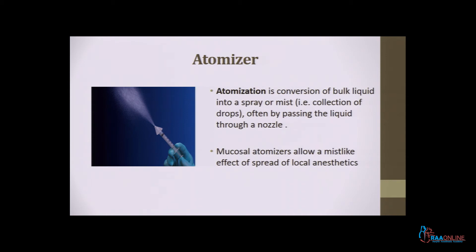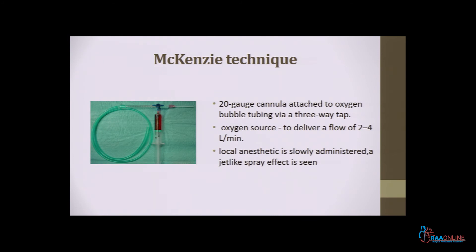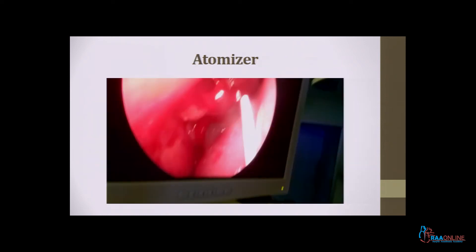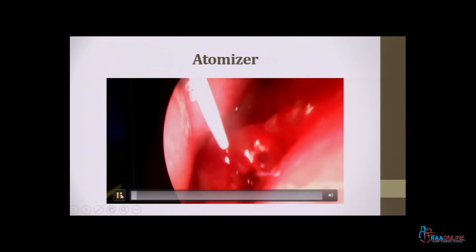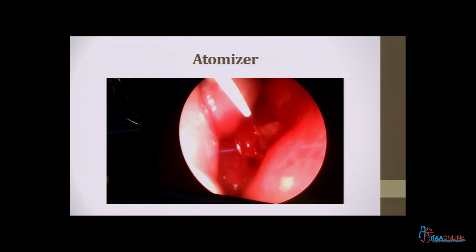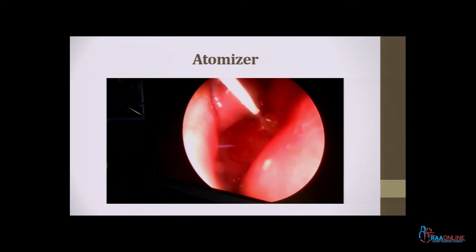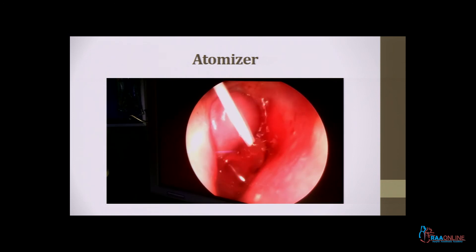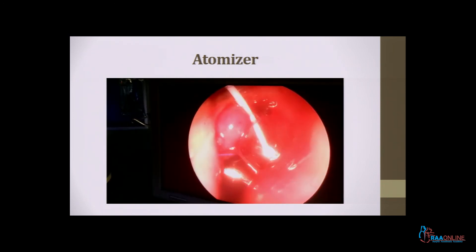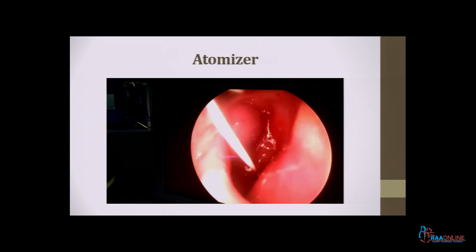One such equipment is available, and a recently introduced method is the McKinsey technique, which uses commercially available items: an arterial cannula, a 3-way adapter, a syringe with local anesthetics, a monoval syringe, and oxygen tubing. The advantage is that oxygen flow is utilized to deliver the local anesthetic. The video shows how only 2 ml of local anesthetic, along with oxygen, is sprayed to cover the entire nasal mucosa so that no portion remains unanesthetized.